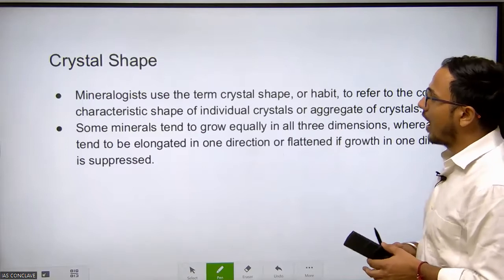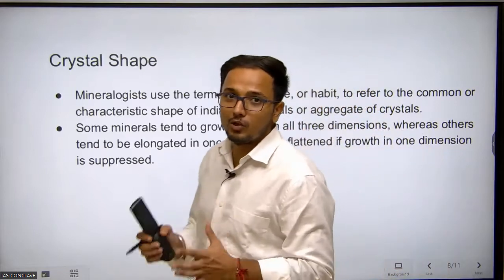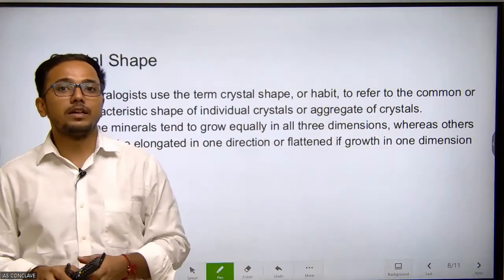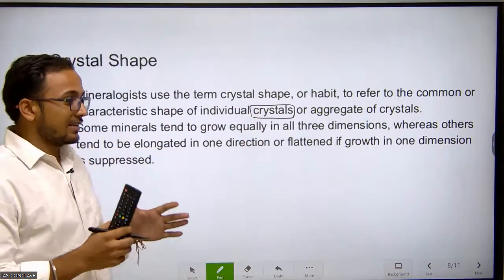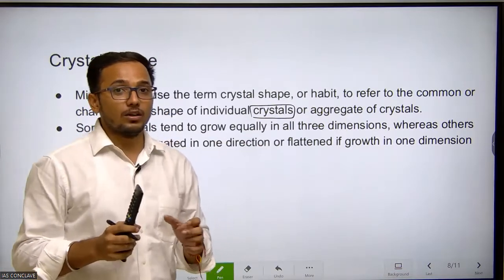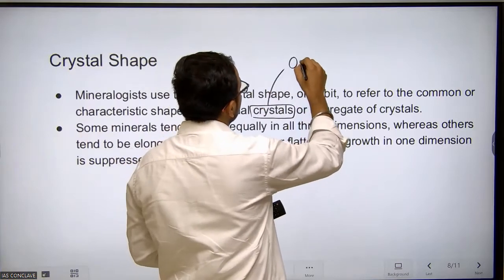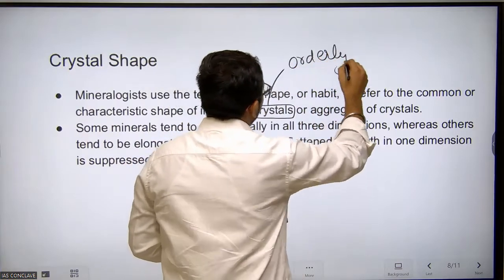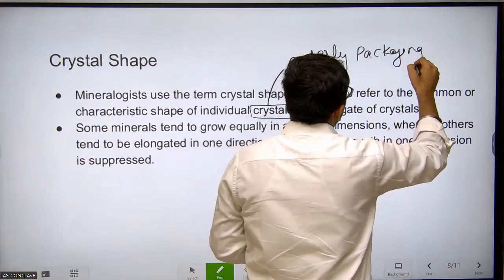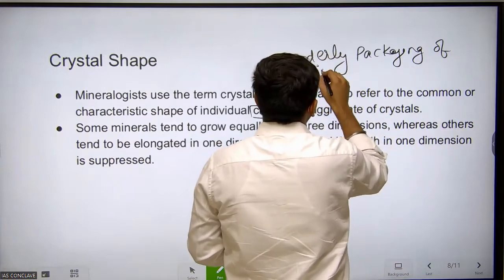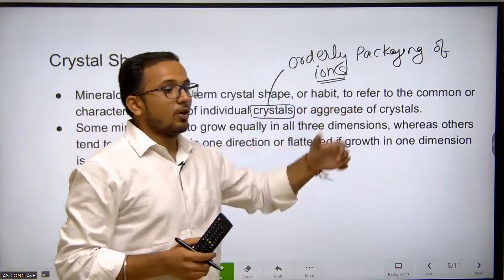So let's start. What are crystal shapes? Crystal shapes can be defined as the characteristic shape of individuals or aggregates of crystals. So what are crystals? Crystals are the orderly packaging of ions.